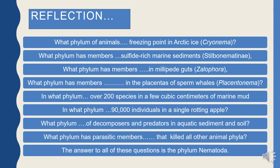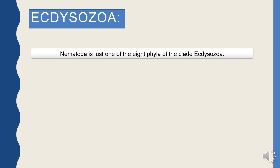This is Phylum Nematoda, which is a very important phylum to discuss from the zoological as well as parasitological perspective. Let's discuss Ecdysozoa. Ecdysozoa is the clade where Phylum Nematoda is placed. It is one of the 8 phyla of the clade Ecdysozoa.